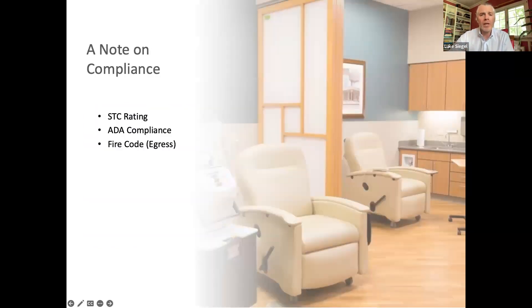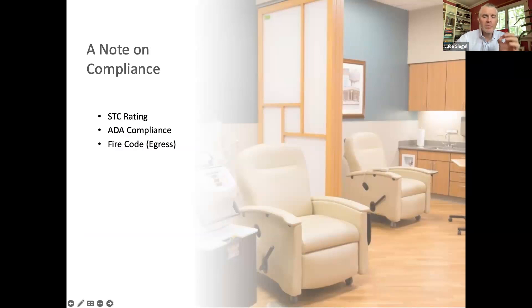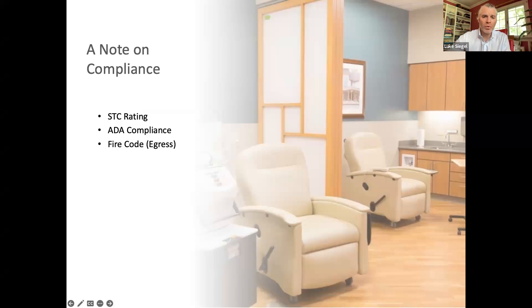Quick note on compliance: STC rating, or Sound Transmission Class. Most of what we've been looking at are speech-private systems with an STC rating of 15 to 25, which means you can hear muffled speech through the partition. Lightweight systems afford more aesthetic options and are easier to operate. If you need a higher STC for an autonomous function, panels will likely be heavier with fewer aesthetic options, more vertical and top-and-bottom seals, and sometimes less intuitive to operate — possibly needing a designated operator.